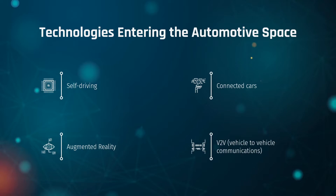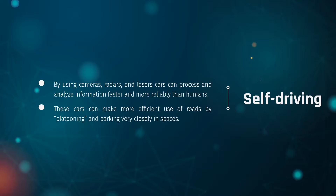Technologies entering the automotive space include self-driving, connected cars, augmented reality, and vehicle-to-vehicle communications. Self-driving requires lasers and radars that can process things much faster and more reliably than humans. We can use these advancements to do things more efficiently on the road, such as platooning — where cars get close to one another to occupy less space on the road — and parking very closely in parking spaces.